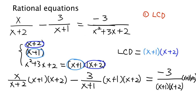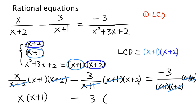Now let's cancel some things out. We have x plus 2 here and here — they cancel. x plus 1 and x plus 1 — they cancel. And the denominator on the right-hand side cancels all the factors of the LCD. So we are left with x times x plus 1 minus 3 times x plus 2 equals negative 3. We have canceled out all the denominators and are left with a nice and simple polynomial equation.